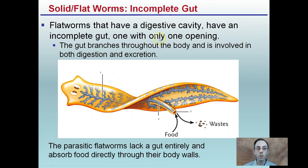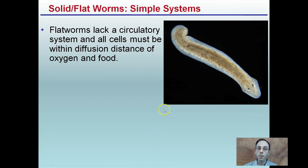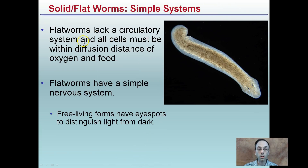Flatworms have an incomplete gut — a digestive cavity with only one opening. The gut branches throughout the body and is involved in both digestion of food particles and excretion of waste through the same opening. Parasitic flatworms lack a gut entirely and absorb food directly through their body walls. They also lack a circulatory system, and all cells must be within diffusion distance of oxygen and food — this is why they're flat, giving them a great surface area to volume ratio.